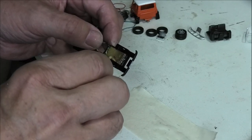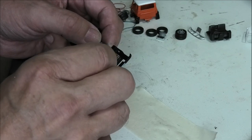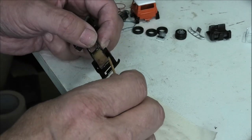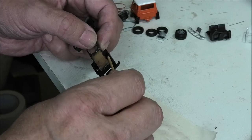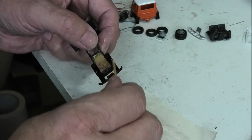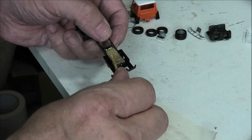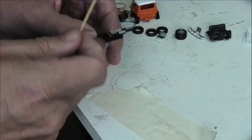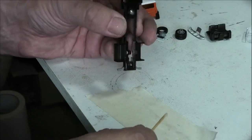And now we put fillets of epoxy wherever we sensibly can in order to get the maximum contact between the original chassis metal and this structural reinforcing plate.